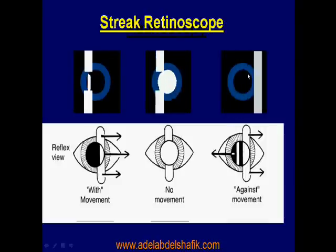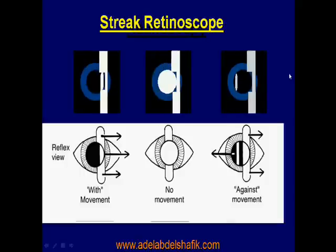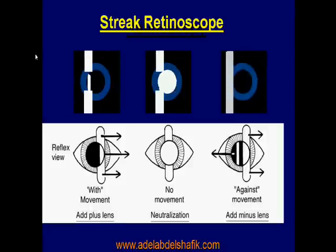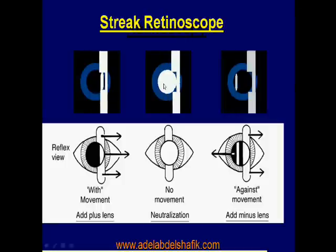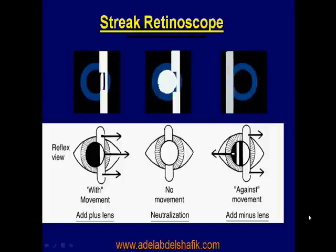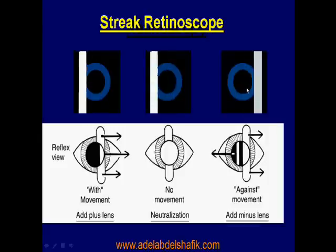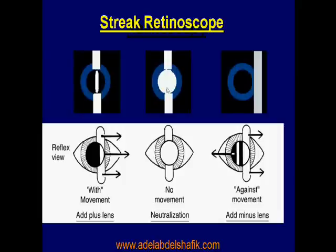In case we have a with movement of the red reflex, we gradually start to put a plus lens in front of the pupil and repeat the test. We gradually increase the power of this plus lens until we reach the situation of no movement. On the other hand, if we have an against movement, we start to put a minus lens and gradually increase its power until we reach no movement of the red reflex — the neutralization position.